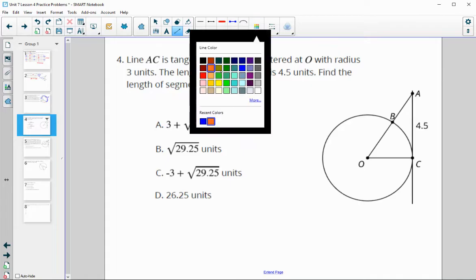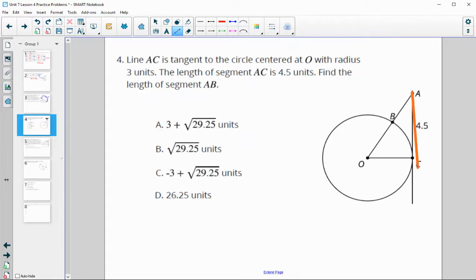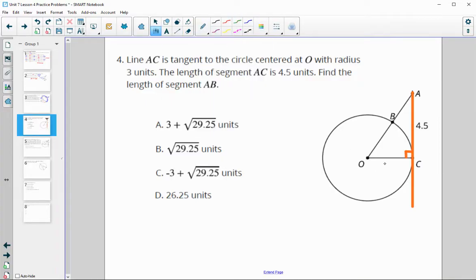Line AC is tangent to circle O. So we know that this angle here is a 90-degree angle. And they tell us that the radius of this circle is 3 units. So we know this is 3, and we know this is 3. The length of segment AC is 4.5.